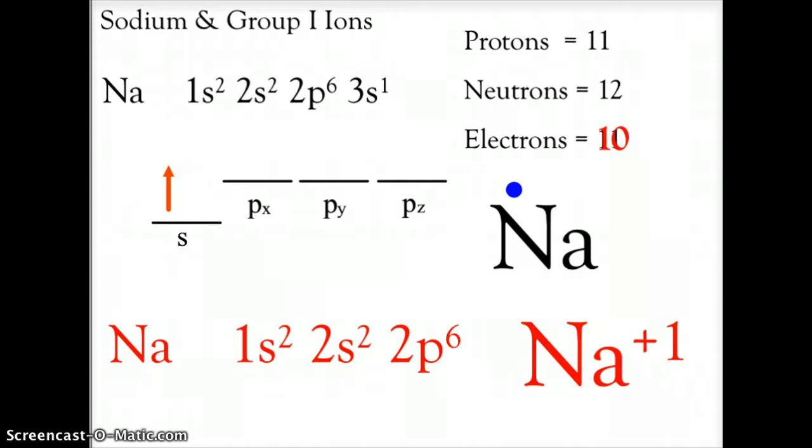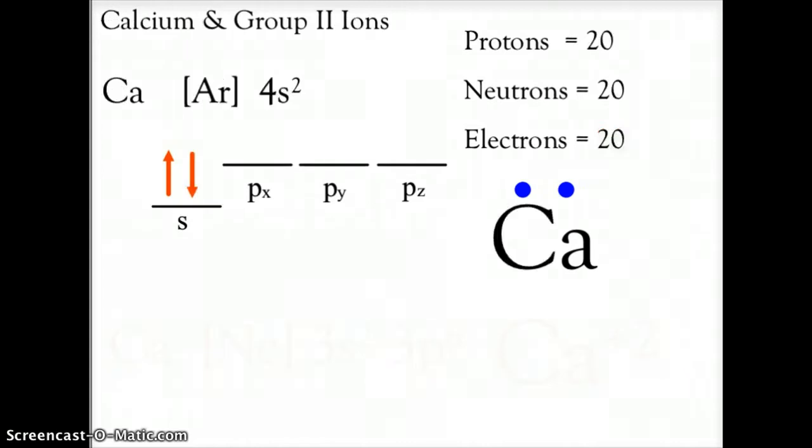Let's look at group 2, and we will use calcium as our example. For calcium, we're going to use the noble gas, or core notation, of argon 4s², which gives us 2 electrons in the s suborbital, and that gives us 2 dots in the Lewis dot. Again, we're looking at a situation where we have 6 empty electron spaces, and because it has 20 protons, 20 neutrons, and 20 electrons.